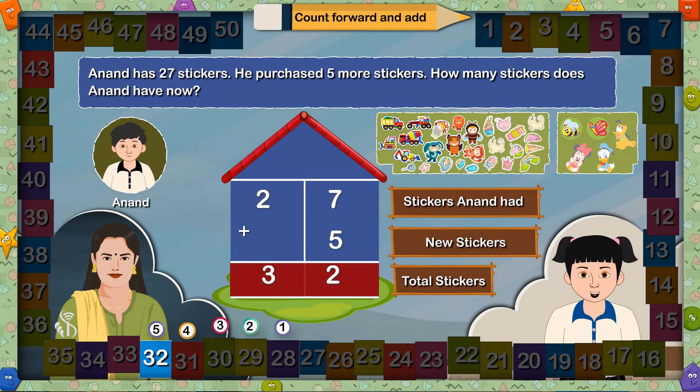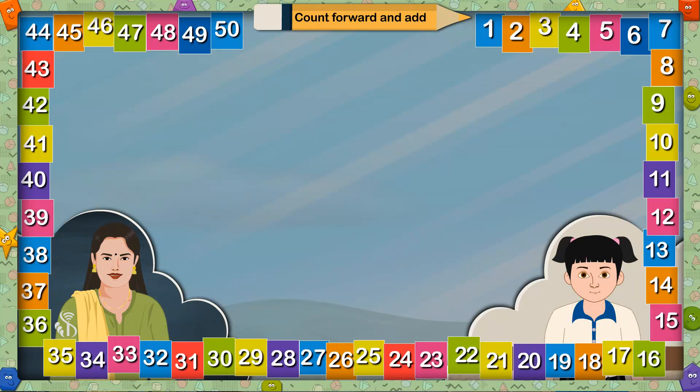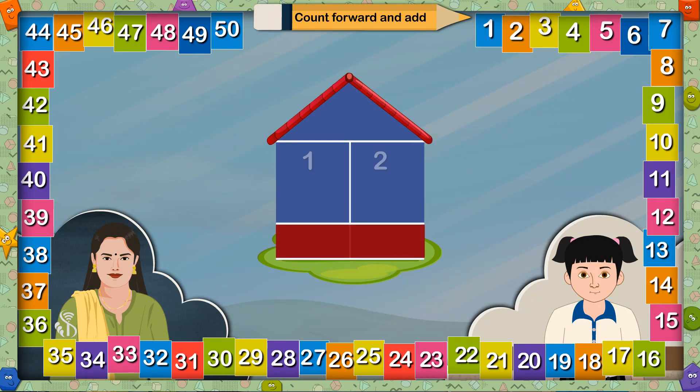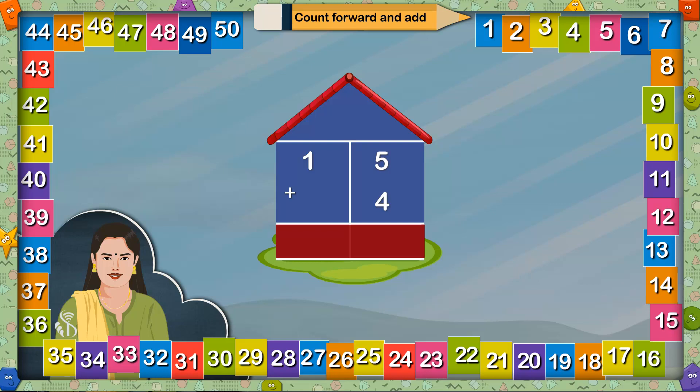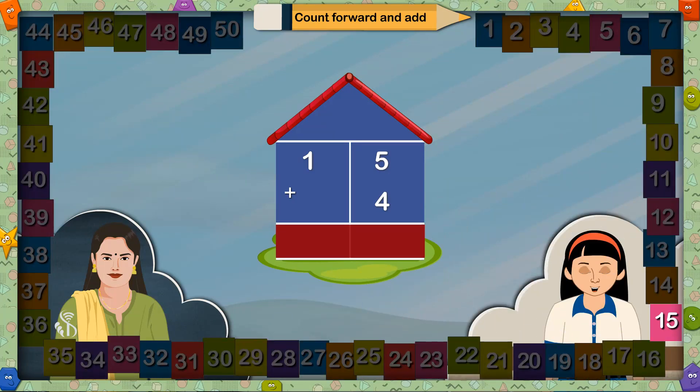Well done. Now I will give you some sums. You have to count the places in your mind and tell me the answer quickly. 12 plus 5 equals? 5 places after 12 means 17. 15 plus 4 equals? 4 places after 15 means 19.